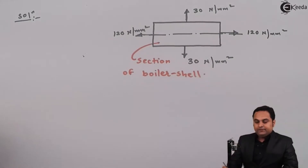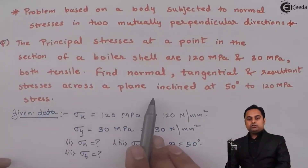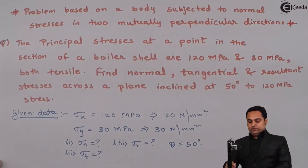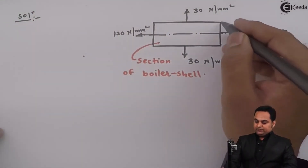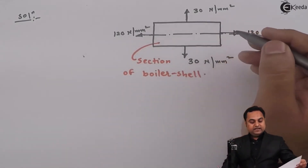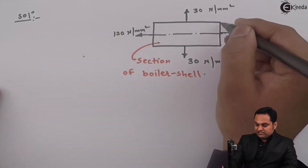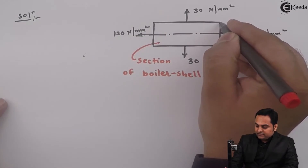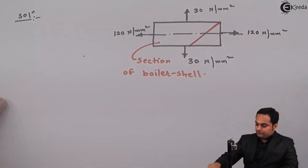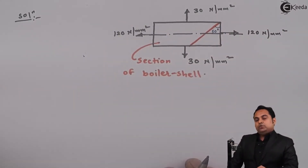We have to find the normal, tangential, and resultant stresses across a plane inclined at 50 degrees to the 120 megapascal stress. The 120 N/mm² stress acts on a face, and the plane is inclined to that face at 50 degrees. So the theta value is 50 degrees.